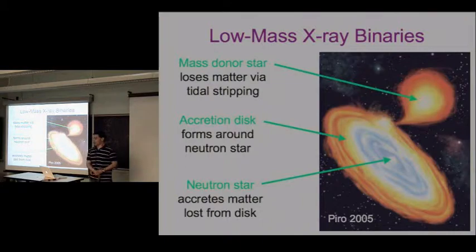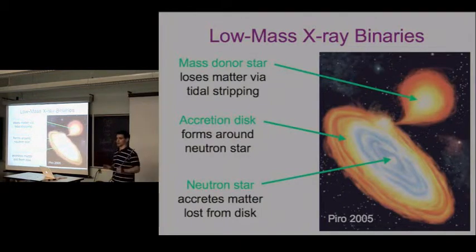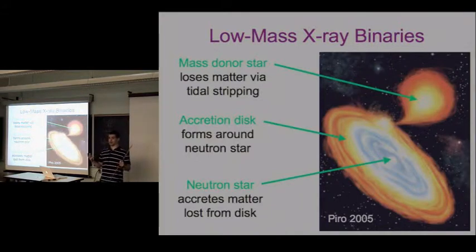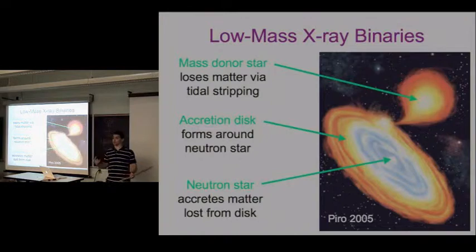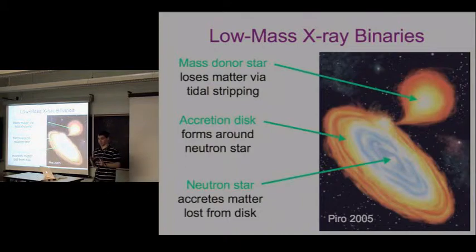Type I X-ray bursts occur in what are known as low-mass X-ray binaries. A low-mass X-ray binary consists of a regular mass-donor star less massive than the neutron star - maybe a solar mass. Gravity from the neutron star strips matter from the donor star. This stripped matter has angular momentum so it doesn't fall directly on the neutron star; it revolves around it in an accretion disk. Matter in the accretion disk loses angular momentum, spirals inward, and eventually lands on the neutron star surface.